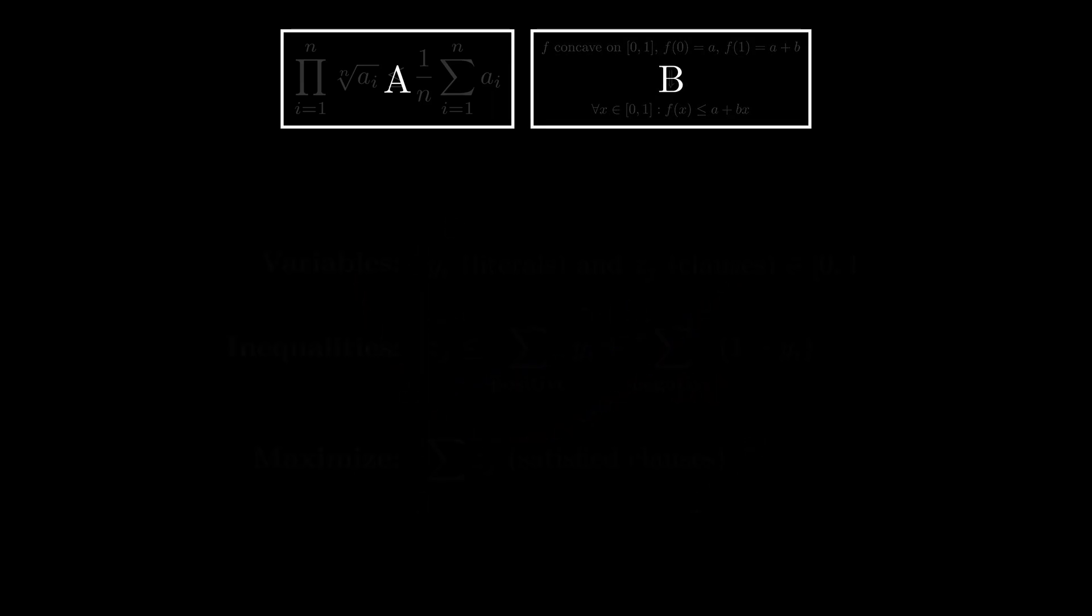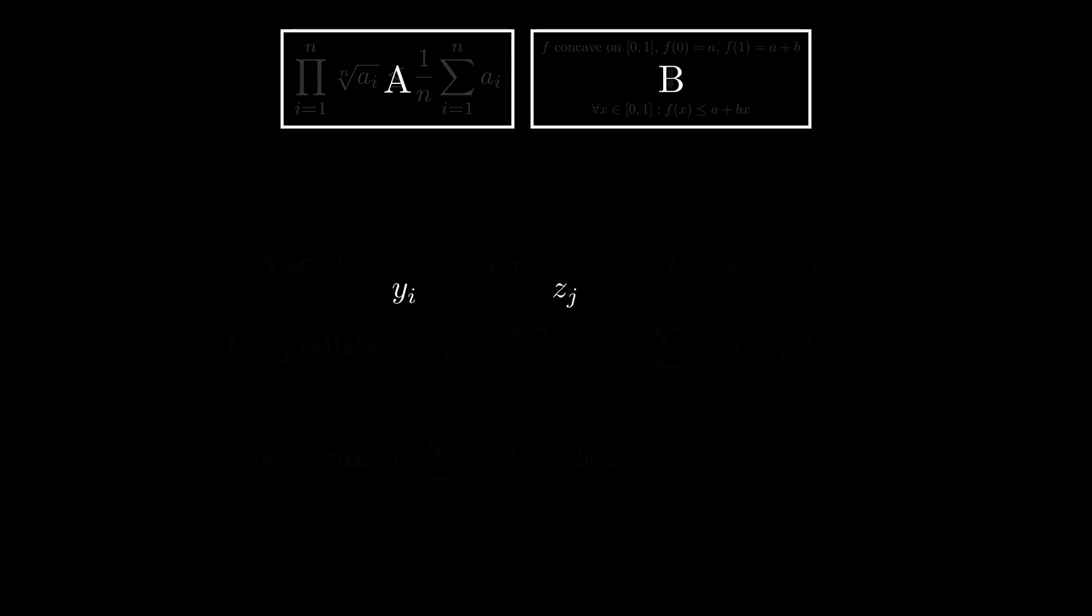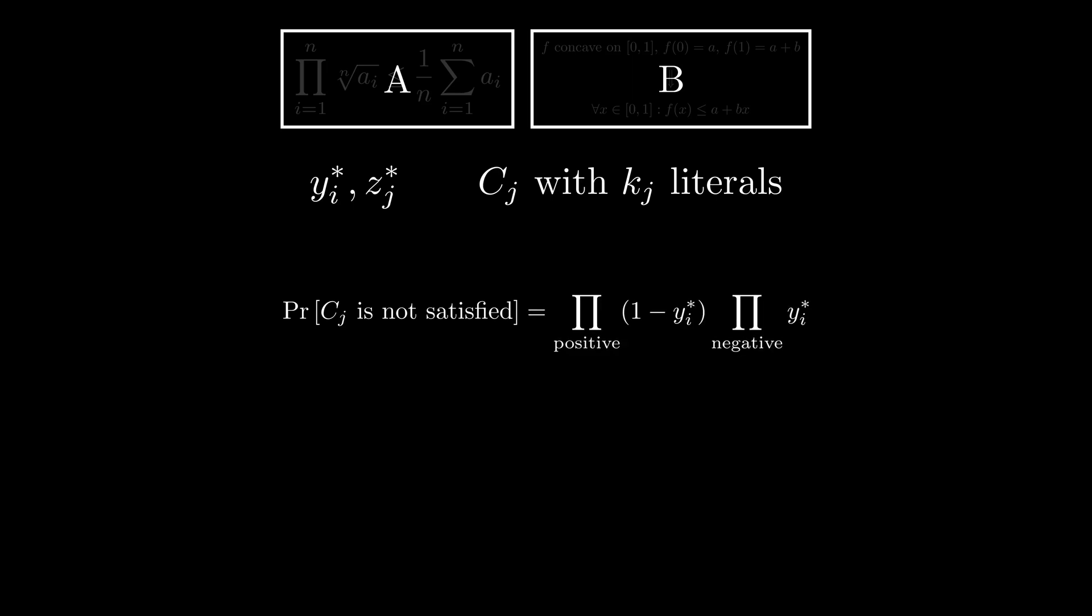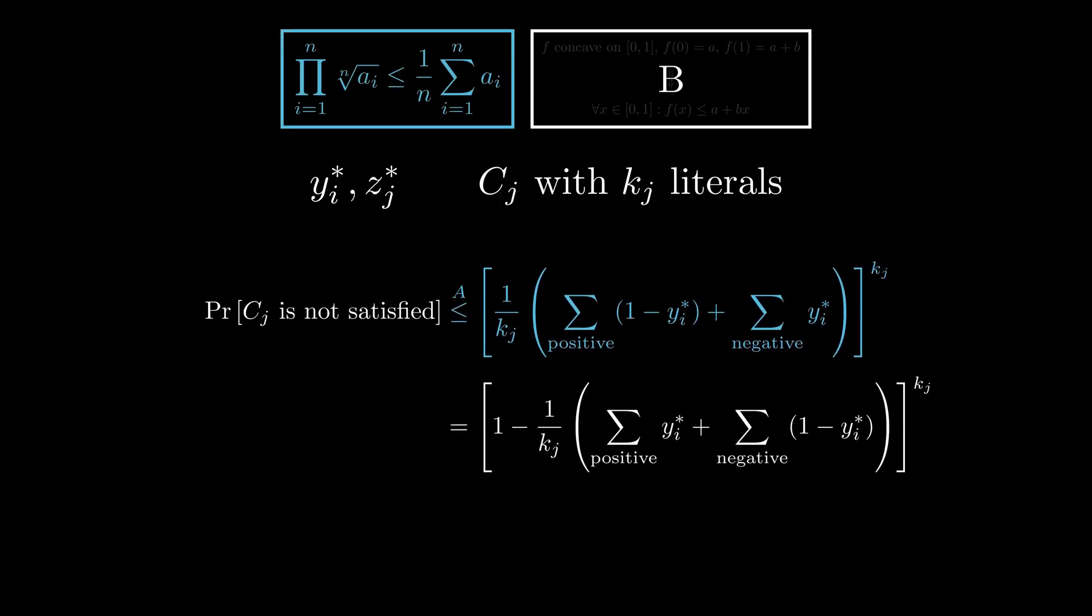If you recall, this is the linear program we used as hints for LP-SAT. Now, consider the optimal solution of the relaxed linear program and a clause containing Kj literals. For it to not be satisfied, LP-SAT has to decide that all its positive literals be false and all its negative literals be true, the probability of which is the following product. Using fact A, the products turn into sums, which can further be turned into the following expression. Now, you can notice that the expression in the parentheses is just the Jth inequality, so we can simplify in the following way.